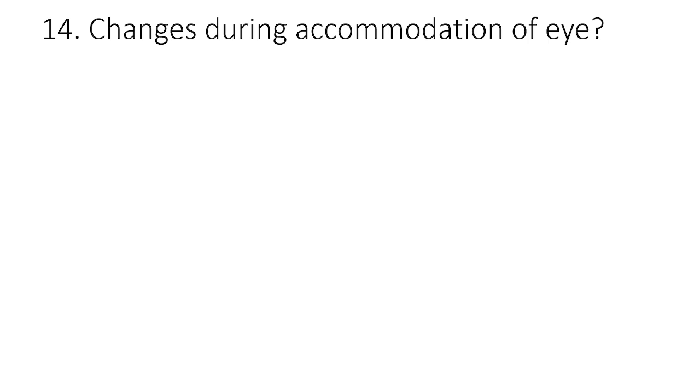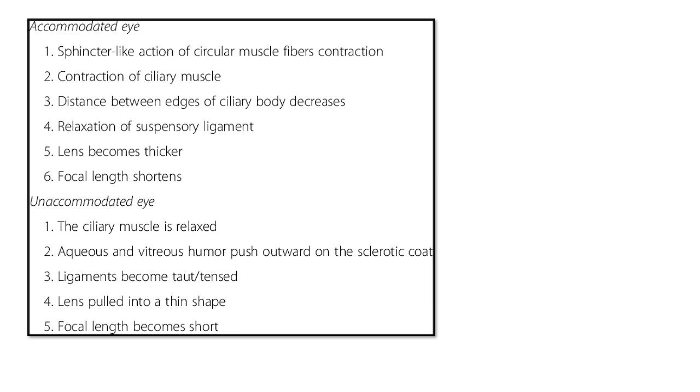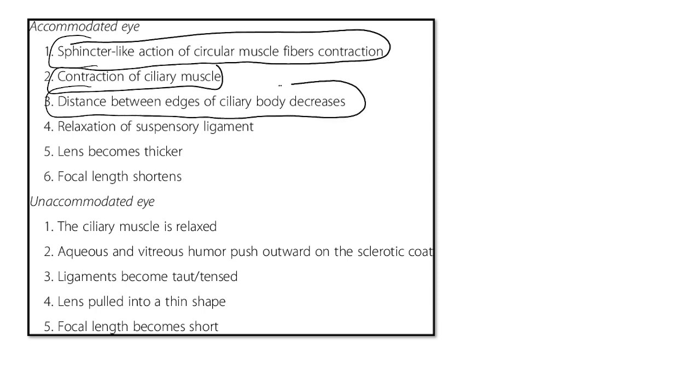Changes during accommodation. Very simple question. Lens diameter decreases, lens thickness increases. What we can see here in accommodated eye, there will be sphincter-like action of circular muscle fibers, contraction of ciliary muscle, distance between the edges of ciliary body decreases, relaxation of suspensory ligament, lens becomes thicker, focal length becomes shorter. If you write this point, you will get 3 out of 3.